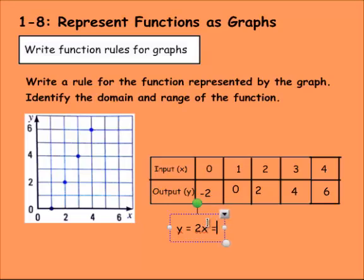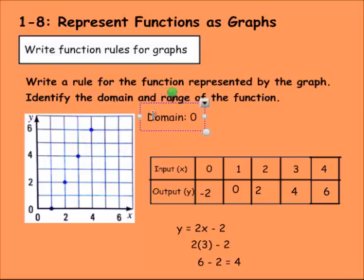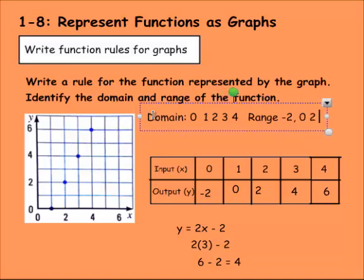That means we were subtracting 2 from our answer here. We could test our answer to see if we like it too. We could try plugging in 3 for x. So we'd say y equals 2 times 3 minus 2. 2 times 3 is 6 minus 2 would equal 4. So do we have 3 and 4? That matches up perfectly. You can always check your answers as well. So the domain would be 0, 1, 2, 3, and 4. The range would be negative 2, 0, 2, 4, and 6.